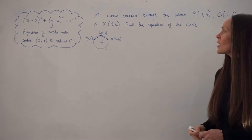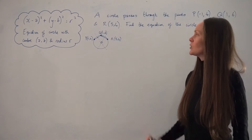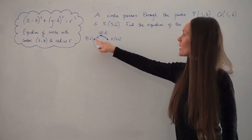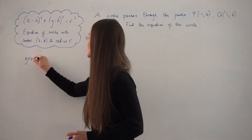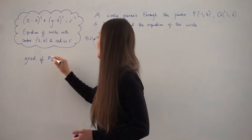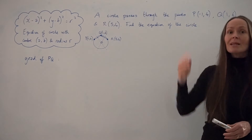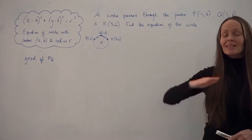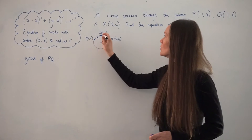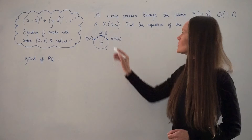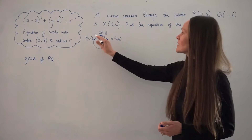I'm going to work out the equations of the perpendicular bisectors, use simultaneous equations to find the coordinates of the centre, and then work out the distance from the centre to any of those three points to get the radius. So let's start by working out the equation of the perpendicular bisector of PQ. I'll begin by finding the gradient of PQ using rise over run — the difference between the Y values divided by the difference in the X values.